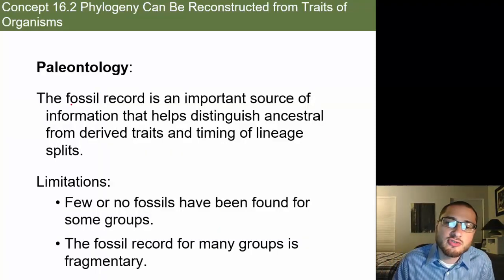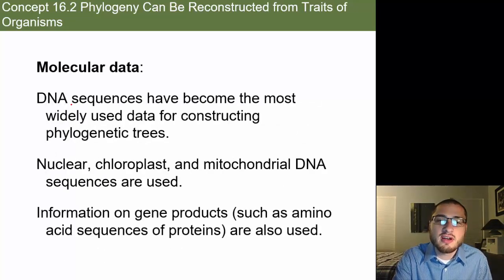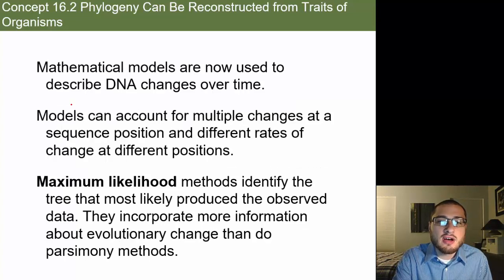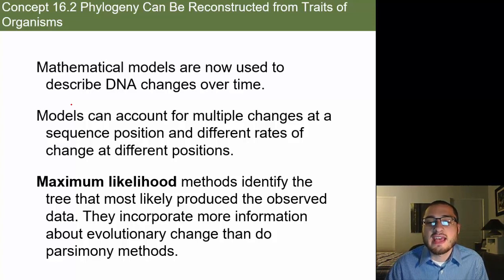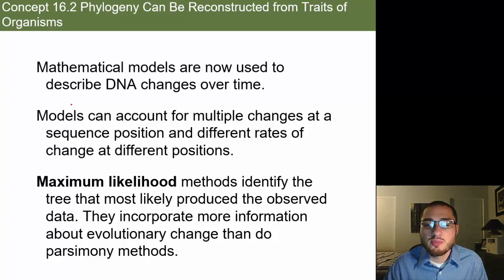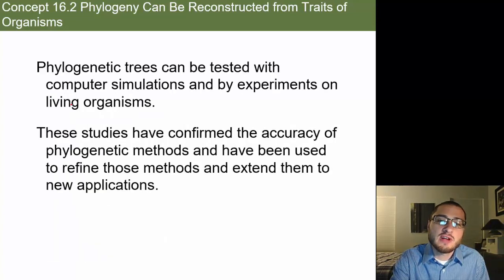We look at data from paleontology — studying fossils — behavioral traits, and molecular data from DNA. We can use mathematical models to describe DNA changes over time. Maximum likelihood methods identify the tree that most likely produced the observed data and incorporate more information about evolutionary change than parsimony methods. Phylogenetic trees can be tested with computer simulations and by experiments on living organisms, and as time goes on we improve those systems and the data we collect.